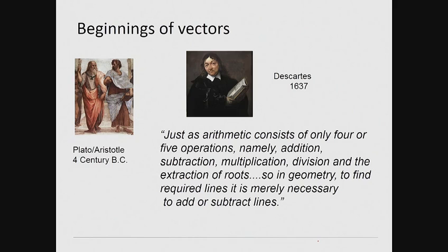It was in 1637, though, that Descartes produced a more abstract and modern view of a vector, stating: Just as arithmetic consists of only four or five operations—addition, subtraction, multiplication, division, and the extraction of roots—so in geometry, to find required lines, it is merely necessary to add or subtract lines.